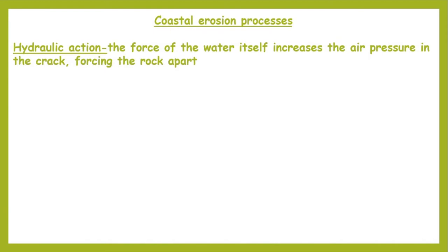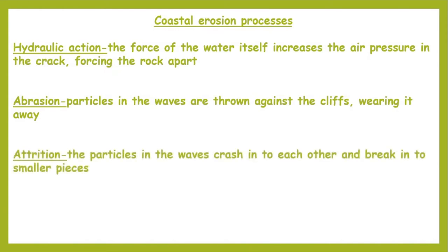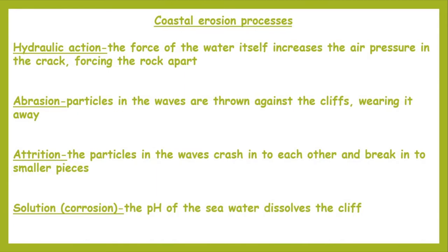You've got hydraulic action, which is the force of the water itself. The waves press into the cliff face and wherever there's a crack or weakness, it forces air in ahead of the wave. That air pressure can be so immense that it actually starts to force the rock apart. We've got abrasion, the sandpaper action where particles in the waves — bits of rock, sand, and pebbles — wear away the cliff. We've got attrition, where particles in the waves crash into each other and break into smaller pieces. Finally, solution is where the acidity or alkaline levels of the water can dissolve the cliff, particularly common in areas of limestone or chalk, which are calcium carbonate based rocks easily dissolved by weak acids.